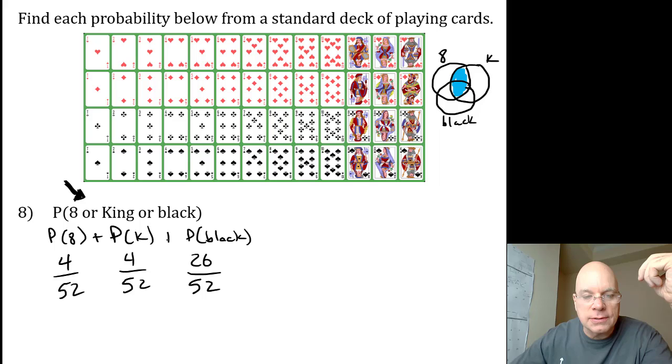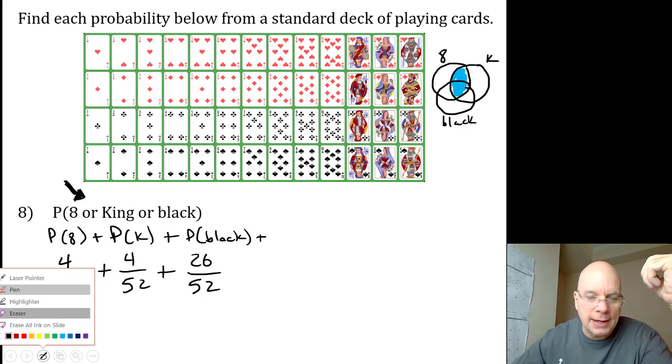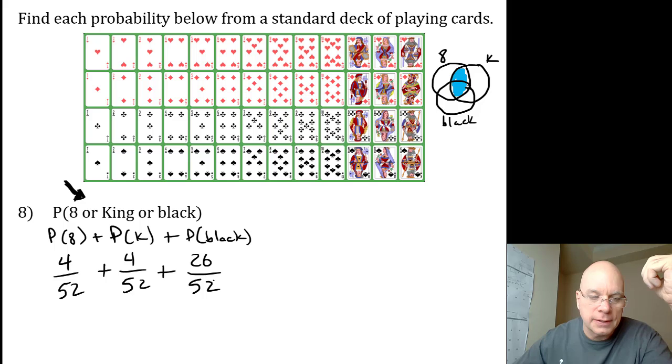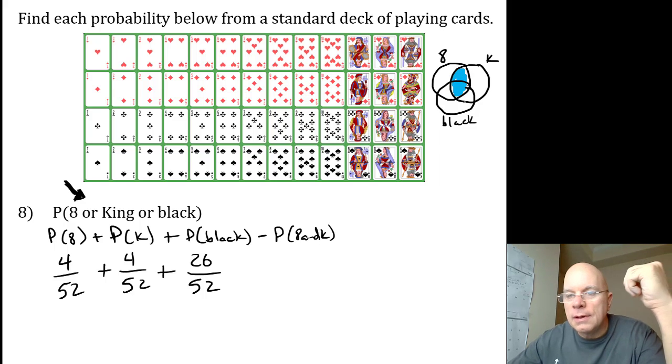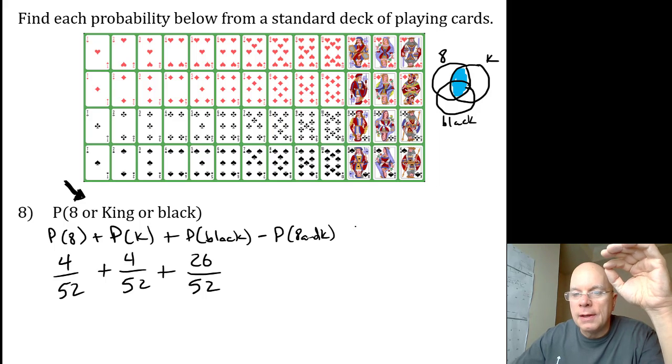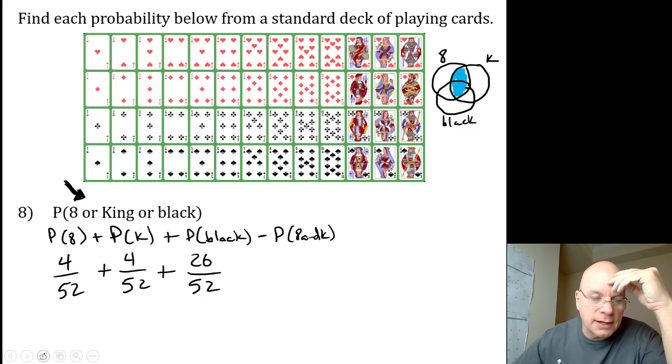We know we're going to add these, right? If there existed an eight that was also a king, we would subtract the probability of eight and king. But there isn't, so we don't have to worry about that one. Let me erase that and highlight another intersection.